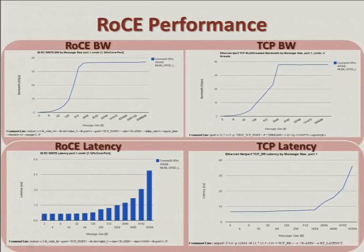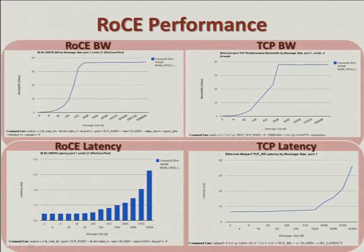A little bit of RoCE performance. We get to line rate at 40 gigabit. Looking at TCP bandwidth by message size, we get to line rate around 1K message size for RoCE and around 2K for TCP. For RoCE latency versus TCP: we get under 1 microsecond for RoCE, while TCP reaches about 10 microseconds.